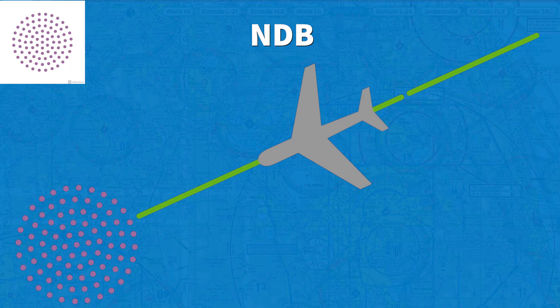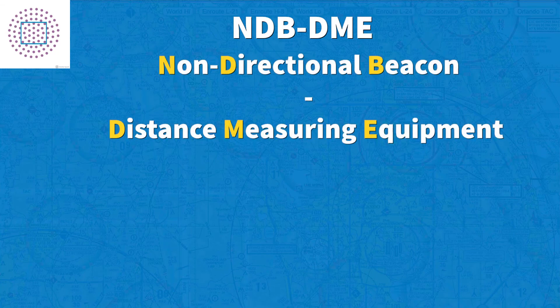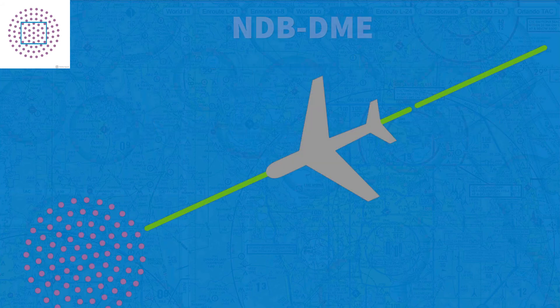This type of navaid has a longer range, so you can receive signals from it even if you're still quite far from the station. And logically enough, if you see an NDB symbol combined with a DME, it means that that specific NDB also has distance measuring equipment, so you will be able to accurately see how far from the station your airplane is.